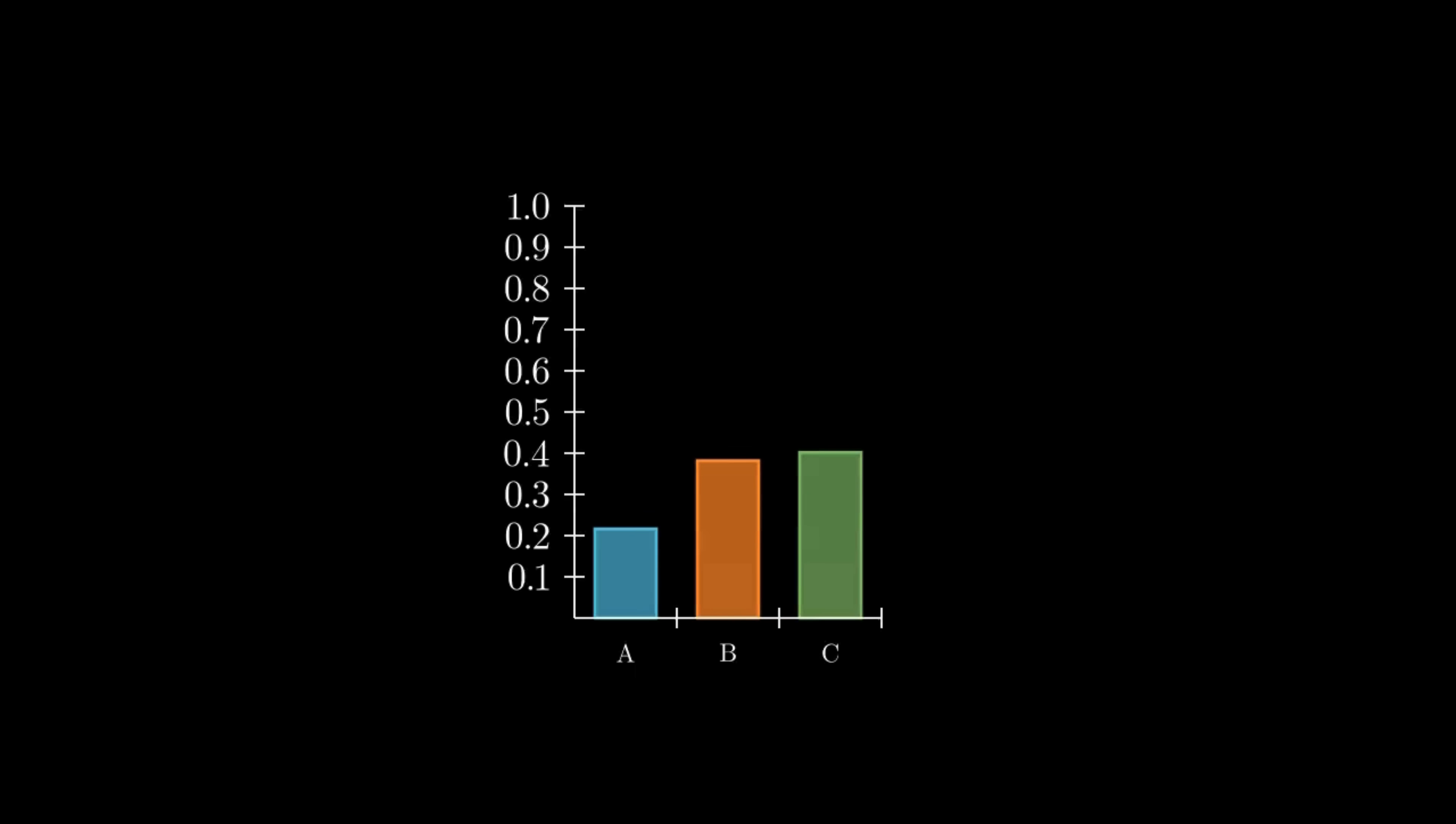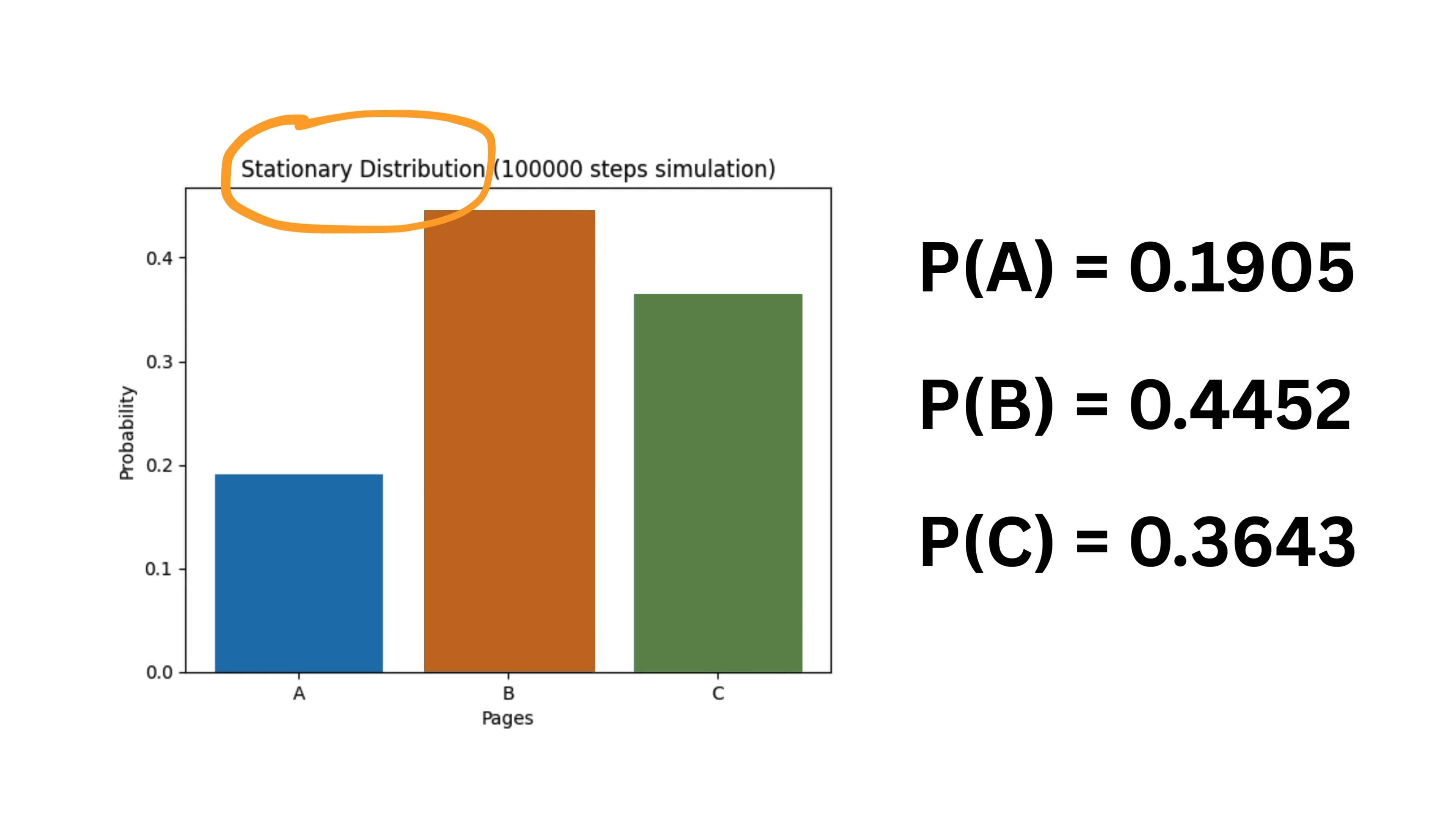Surprisingly, no. If we run the simulation for long enough, the probabilities tend to settle down to fixed values. This stable set of values is known as the stationary distribution. It tells us how likely a user is to be on each page in the long run. And these values don't change anymore as time goes on.